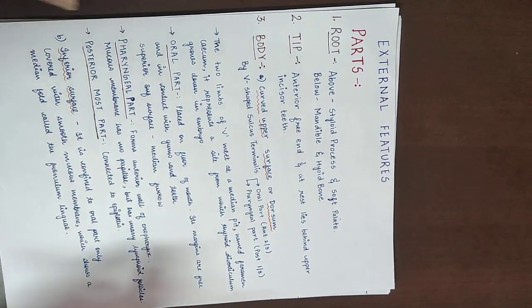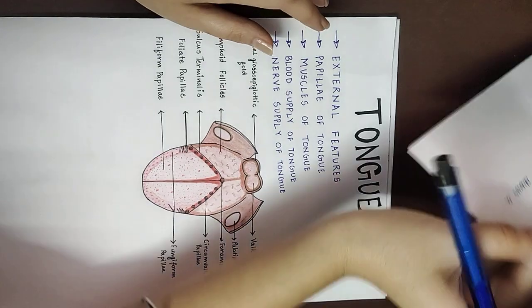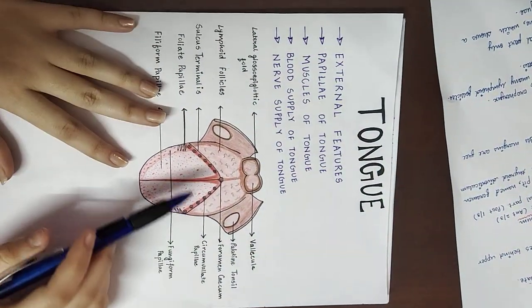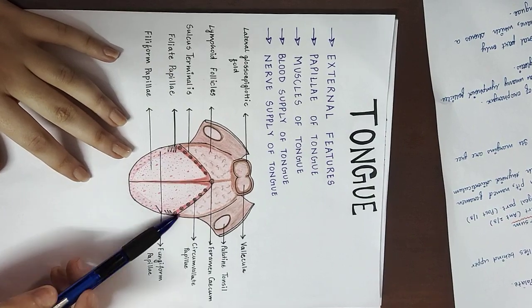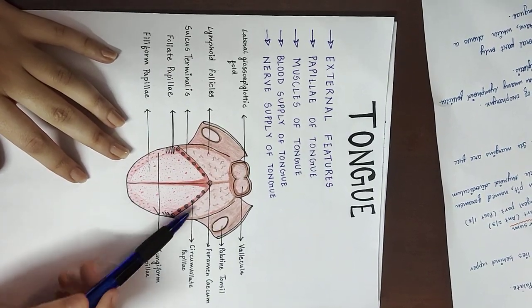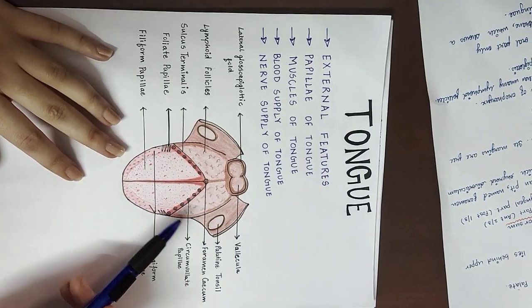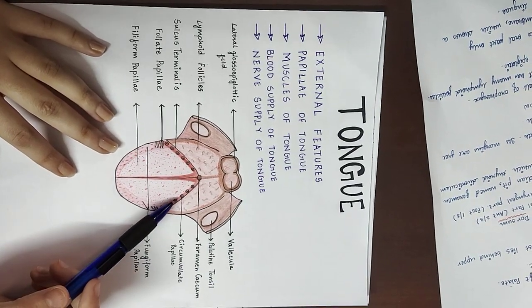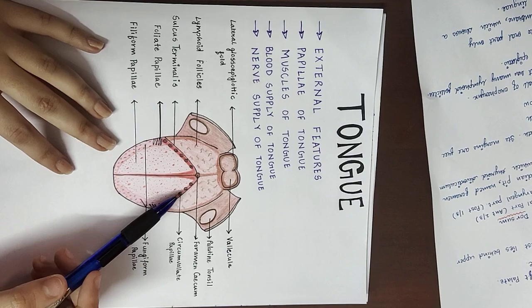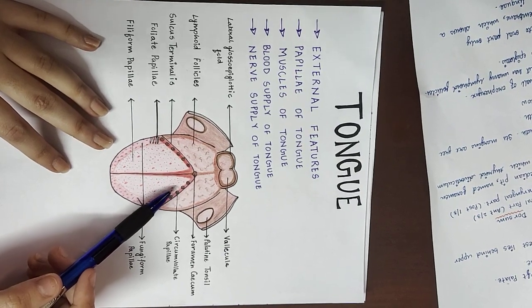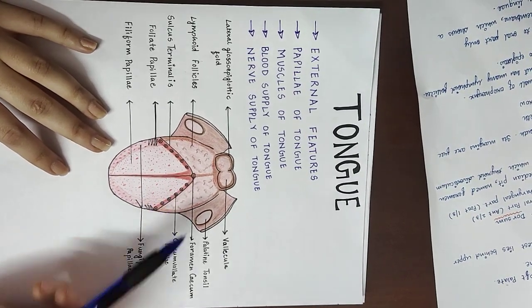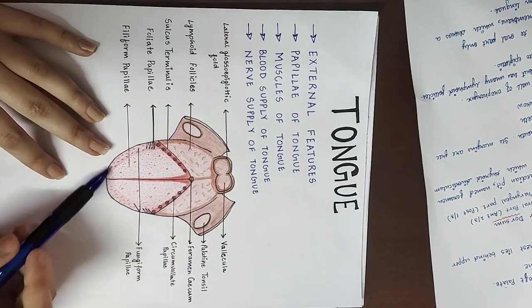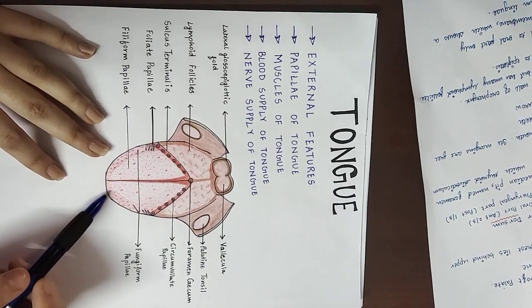Now let's learn about the papillae of the tongue. There are basically four types. The first are the circumvallate (or vallate) papillae. These are located just anterior to the sulcus terminalis. There are 8 to 12 of them, measuring 1 to 2 mm. These are the biggest papillae and they contain taste buds. The second type is the fungiform papillae, which are present on the sides and tip of the tongue.